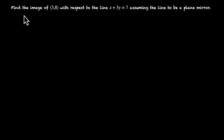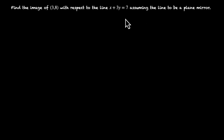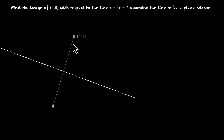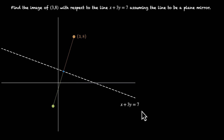Let's solve an interesting problem. Find the image of (3,8) with respect to the line x plus 3y equals 7, assuming the line to be a plane mirror. So let's visualize this. We have the x-axis and y-axis. This is the point (3,8) and this is the image of this point in this mirror. The equation of this mirror, this line, is x plus 3y equals 7. We need to figure out the coordinates of the image.